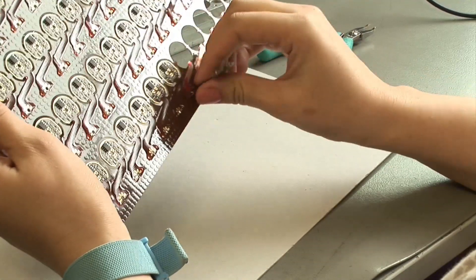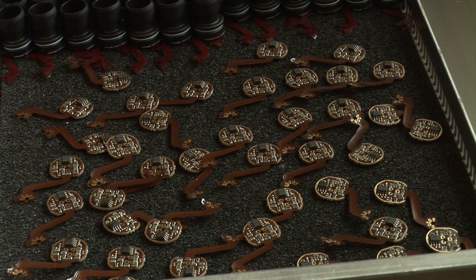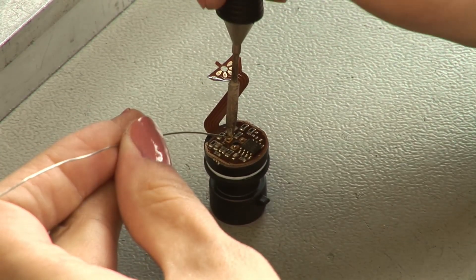For compensation, the pressure transducers are connected to an electronic circuit, a printed circuit board, during production. The connections are soldered by hand.